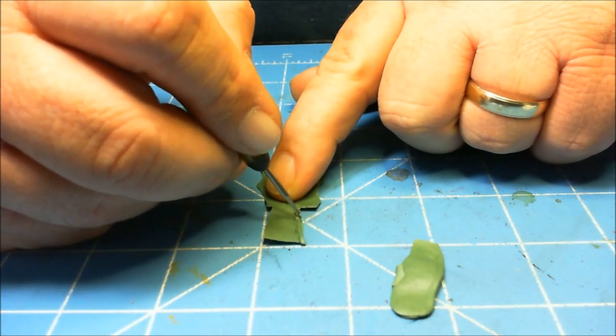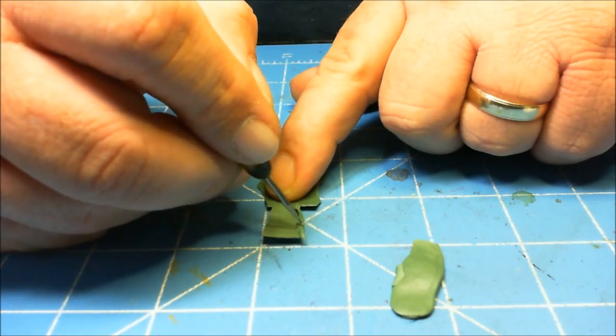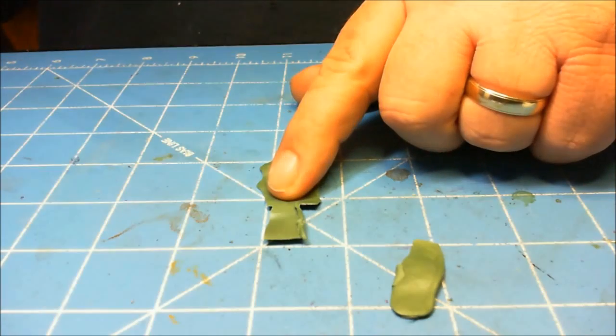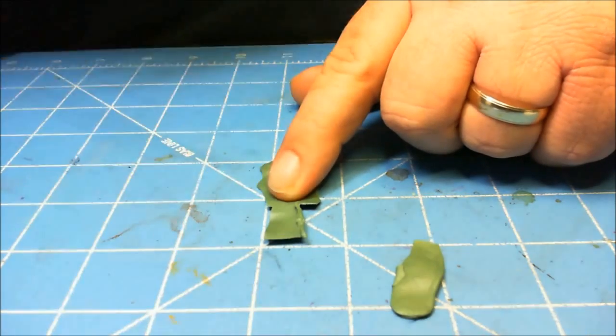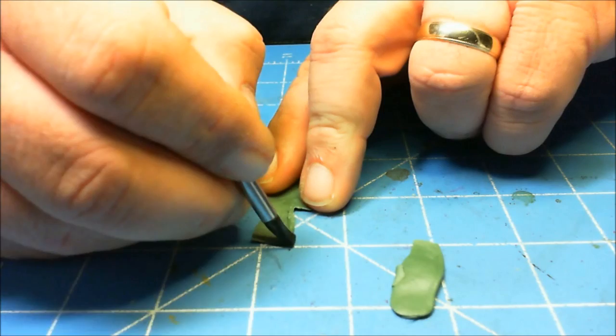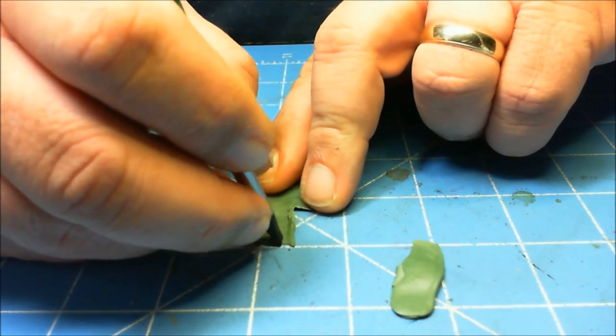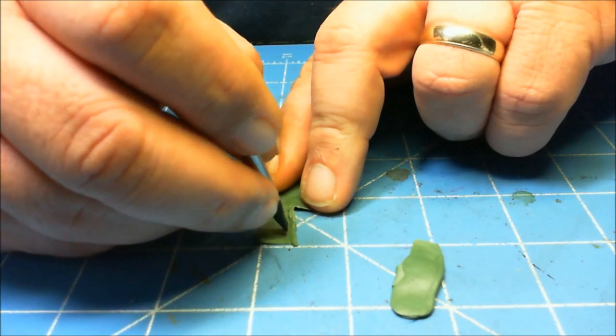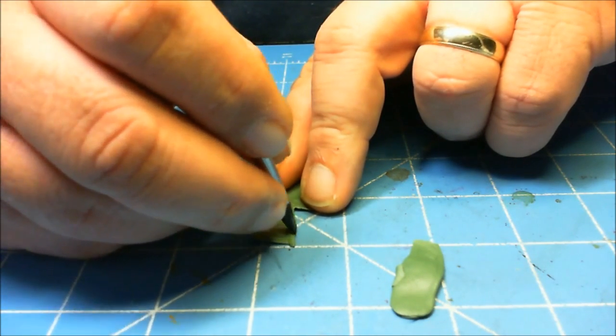Then go back through. Once you got it getting stuck down to the green stuff by going back and forth across the piece, come in with a smoothing tool like this and just drag it over and back until you got a good smooth fold.